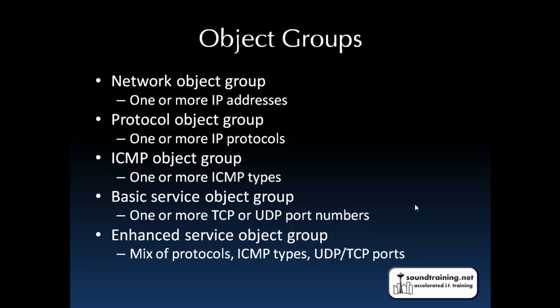We can also use object groups — it's a lot like managing user accounts in groups. You put users in groups and apply permissions once to the group instead of multiple times to each individual user. A network object group is one or more IP addresses — a full network, a subnet, or an individual host. Protocol objects are things like TCP, UDP, IP, ICMP. ICMP object groups let you allow specific types like echo and echo reply. Service object groups cover one or more TCP or UDP port numbers such as 80, 443, 53, or 22. And finally, the enhanced service object group is a mix of all of the above.